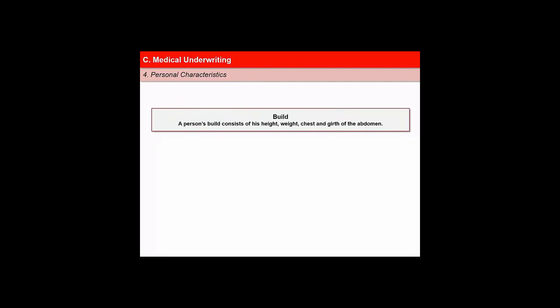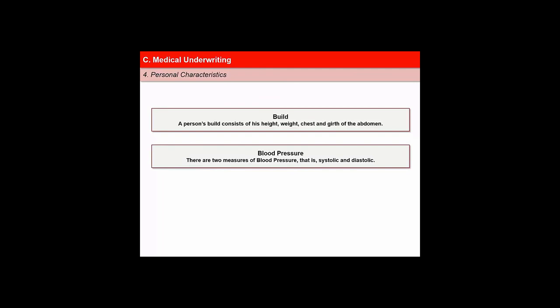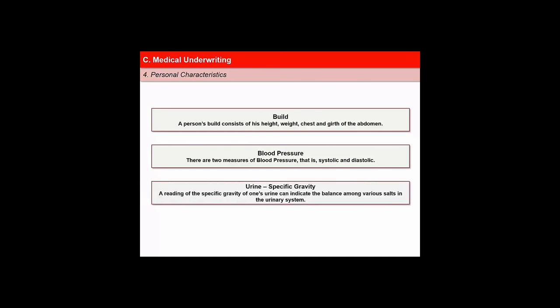Let us now learn about some personal characteristics considered under medical underwriting. First is build — consisting of height, weight, chest, and girth of the abdomen. For a given age and height, there is a standard weight defined with respect to which a person is classified as overweight or underweight. Second is blood pressure, with two measures: systolic and diastolic. Third is urine specific gravity — a reading of the specific gravity of urine can indicate the balance among various salts in the urinary system, useful in diagnosing any malfunctioning of the system.